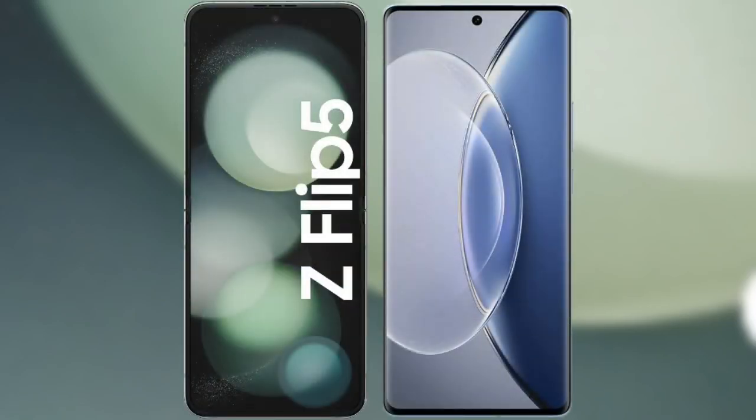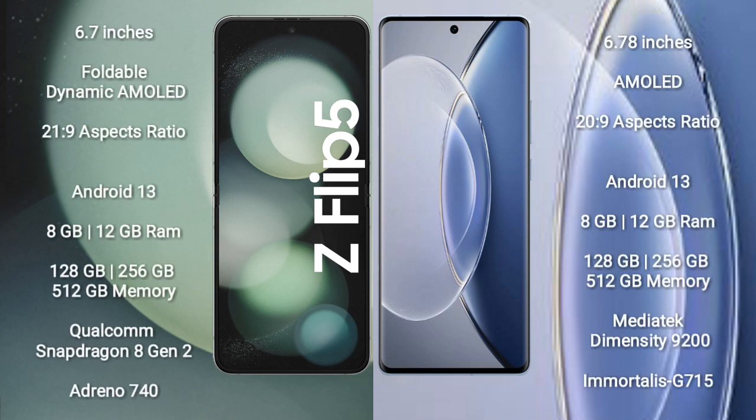I will compare the new Samsung Galaxy Z Flip 5 with Vivo X90. Samsung Galaxy Z Flip 5 comes with a 6.7 inches foldable dynamic AMOLED display with an aspect ratio of 21:9. Vivo X90 comes with a 6.78 inches AMOLED display with an aspect ratio of 22:9.